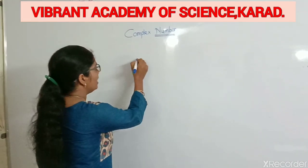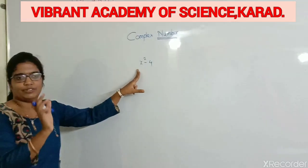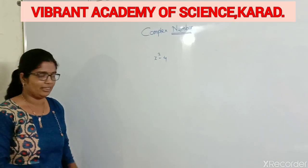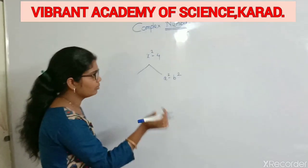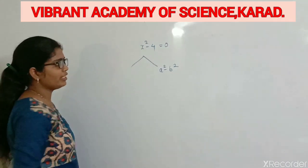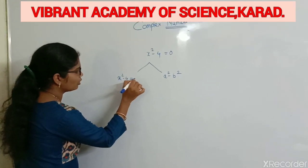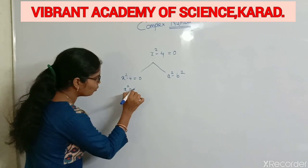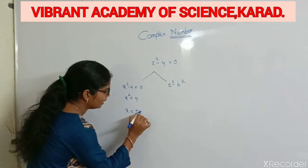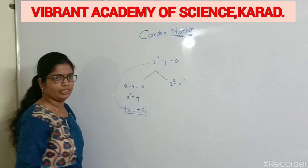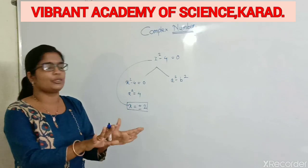Now, consider x squared minus 4 is equal to 0. It has one variable with power 2, so it is a quadratic equation. By transposition we get x squared is equal to 4, so x is equal to plus or minus 2. In this equation, x equals 2 and x equals minus 2 are the solutions.